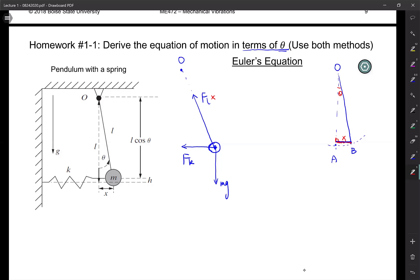Fk does create certain torque, then we need to find the arm. That's the length of the arm, right? This red line. So if you recall, this angle is theta, so that's why this angle is also theta, so the arm length is going to be L times cosine theta.